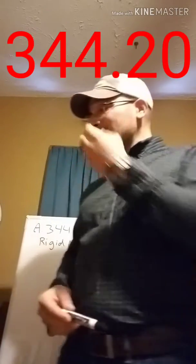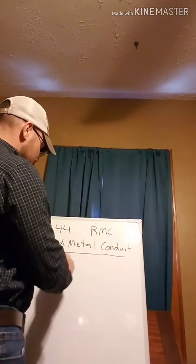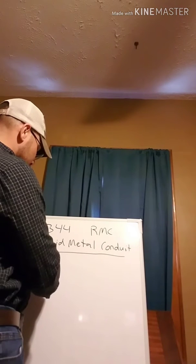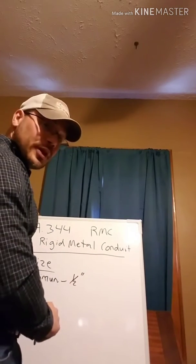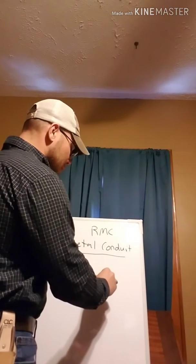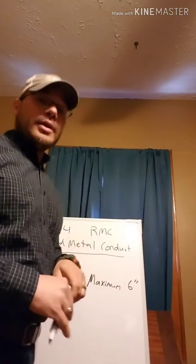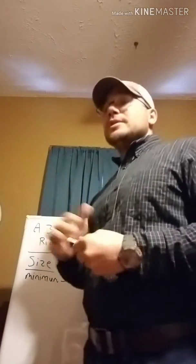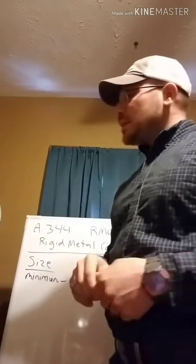Section 344.20 covers size. Here's where it changes a little bit. The minimum is, again just like normal, half inch. The maximum is now six inches. Because it's so much more rigid and stronger, it can handle the weight of those conductors and a lot of the other stresses. Section 344.22 covers number of conductors — that's conductor fill — and that's covered by the Chapter 9 tables.